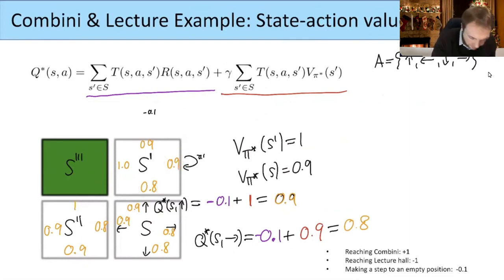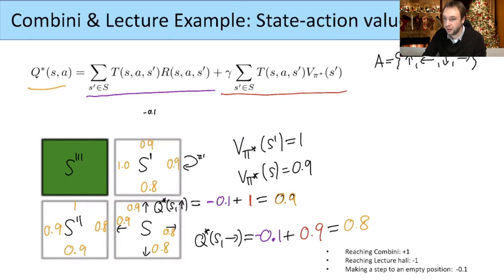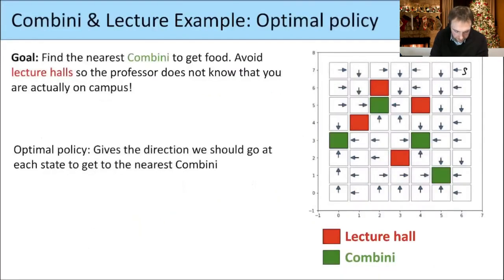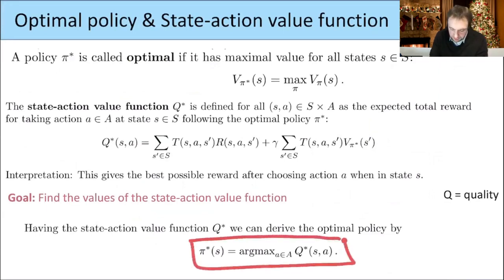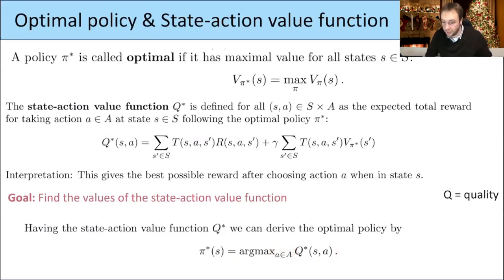If we know these numbers, then at each point we know where we should go. If we are in some state, we just look in all directions and look where the largest number is — and in that direction we go. If we are here and see 0.9 and 0.9, it's the same, so we could go in either direction. If we are here and see the largest number there, we go there, and then we end up at the Konbini.